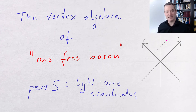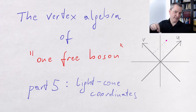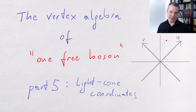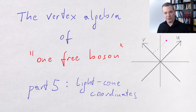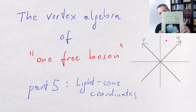Hello Internet! This is the fifth part in our series about the free boson. You can find links to the previous parts in the description below. This time we are going to look at light cone coordinates, which will afford us another look at the right and left moving modes that we discussed last time. This time it will be a more elegant way, like the one taken by more grown-up physicists in books like this one.